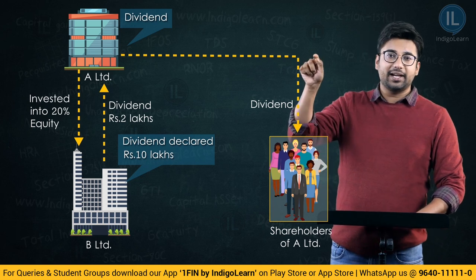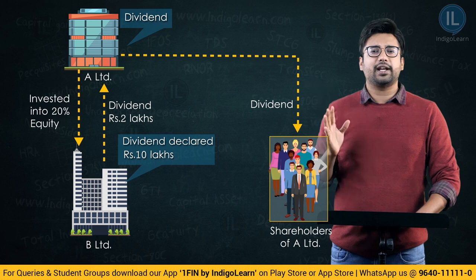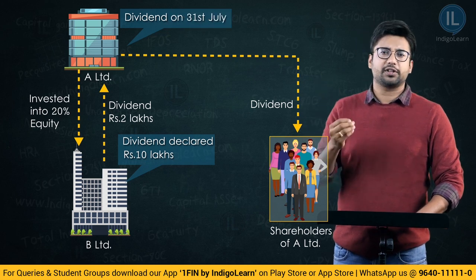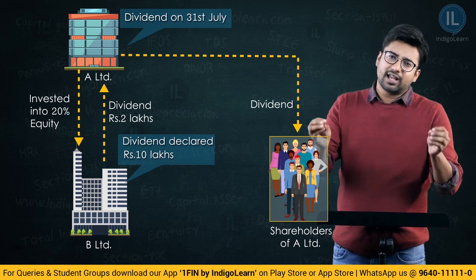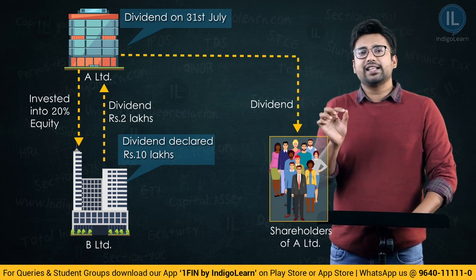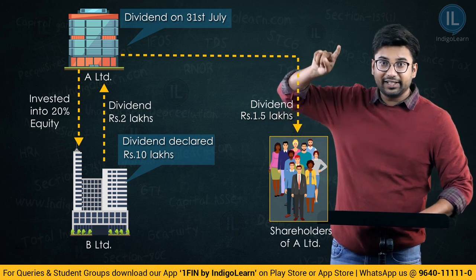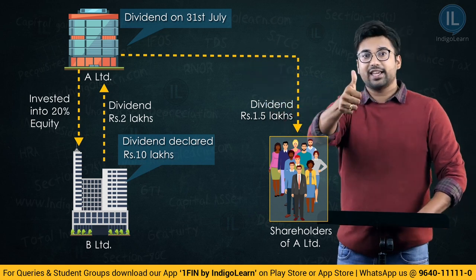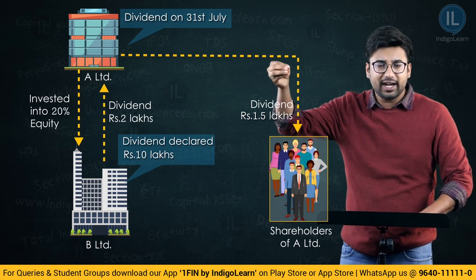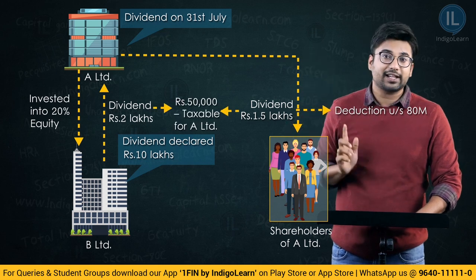Listen carefully. If A Limited distributes dividend — let us say A Limited has distributed dividend on 31st July after the financial year is over — 31st July is on or before the due date under ATM. They have distributed 1.5 lakhs. This 1.5 lakhs that A Limited has distributed, when it reaches the ultimate shareholders, are they going to pay tax on it? Yes. So ATM says this 1.5 lakhs will be taken as a deduction under ATM. It has not distributed the remaining 50,000, and therefore 50,000 will be taxed in the hands of A Limited.